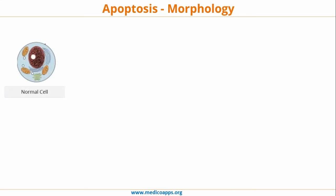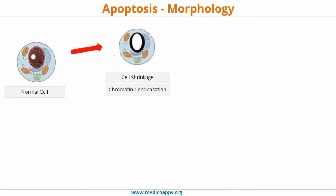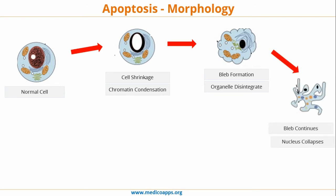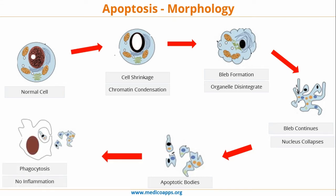Let's look at the morphological changes in the cell during apoptosis. Starting from the normal cell: once the apoptosis signal occurs, there is cell shrinkage and chromatin condensation. Then bleb formation appears on the cell membrane and organelles start to disintegrate. The nucleus then collapses, apoptotic bodies are formed, and these apoptotic bodies are phagocytosed. Importantly, there is no inflammation involved in apoptosis.